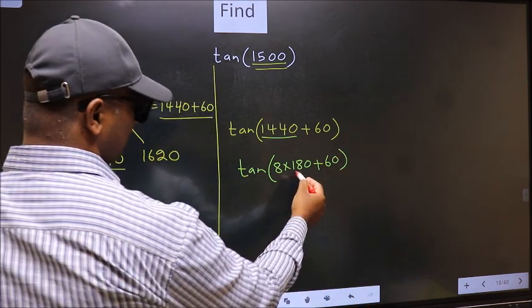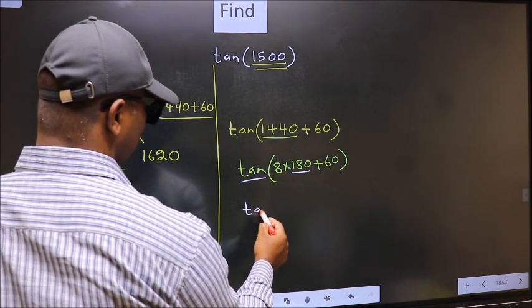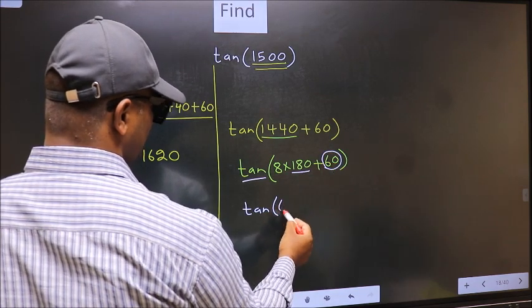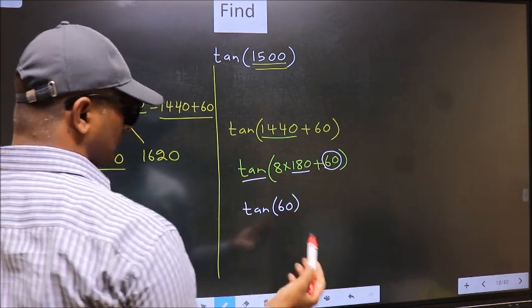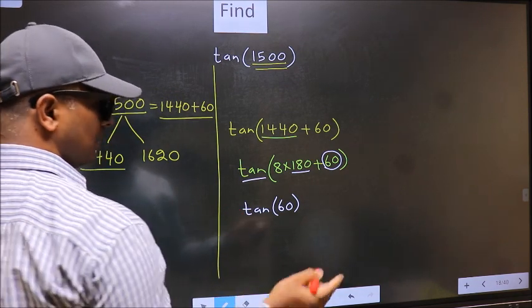Next, here we have 180, so tan is not going to change - it will remain tan. And inside we get this angle 60. Now the question is, will we get here plus or minus? To answer that, we should look at the number before 180, that is 8, and 8 is even.